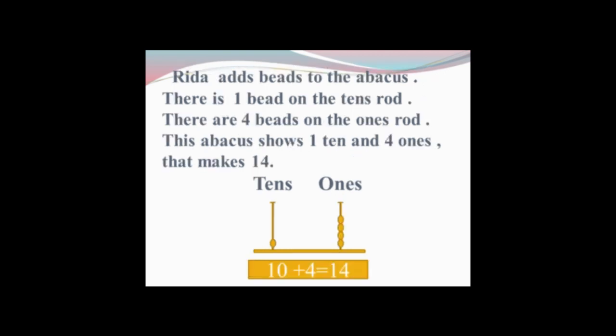I will read a question from page 19. Rida adds beads to the abacus. There is one bead on the tens rod and there are four beads on the ones rod. This abacus shows one ten and four ones — that makes 14. A bead is a small item made of glass, wood, or plastic. On the tens side we have one bead — that means 10 — plus four beads on the ones side. 10 plus 4 equals 14.